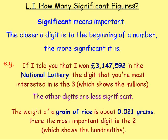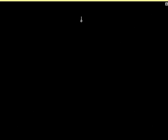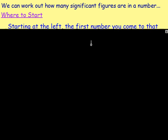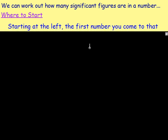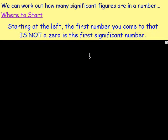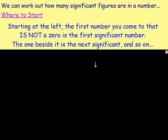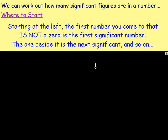So, how to work out how many significant figures are in a number? What we can do is decide where to start, first of all. Starting at the left-hand side of a number, the first digit that you come to that is not a 0 is the first significant number. Beside that you've got the second, beside that you've got the third, beside that you've got the fourth, and so on, working your way down. Always start at the first non-zero digit.